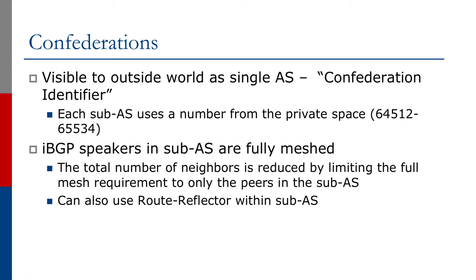Confederations are visible to the outside world as a single AS, so the world doesn't see anything different. Each sub-AS uses a number from the private AS range. IBGP speakers in the sub-AS are fully meshed, or we could use route reflectors within the sub-AS as some operators are doing. The total number of neighbors is reduced by limiting the full mesh requirement to only the peers within the sub-AS.